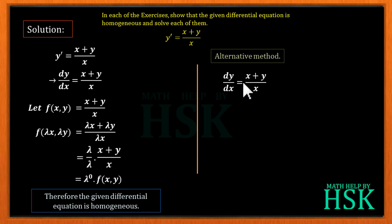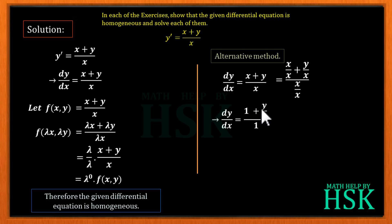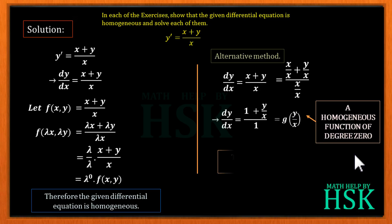We can also prove this by an alternative method. Taking dy/dx = (x + y)/x, if we divide the numerator and denominator by x, we get dy/dx = (1 + y/x)/1. We can assume this as g(y/x), since it can be written purely as a function of y/x. This means g(y/x) is a homogeneous function of degree 0.